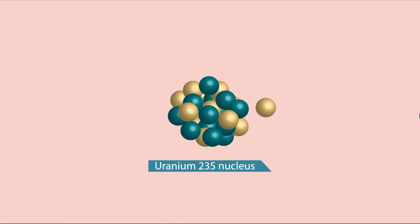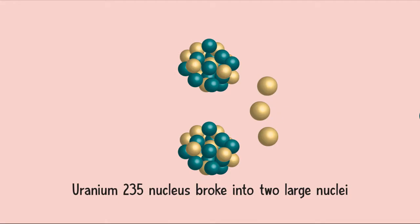Instead of emitting a small particle or radiation as in radioactivity, the uranium nucleus was found to break up into two large fragments. In the process, a very large amount of energy, about 200 mega electron volts, was released.